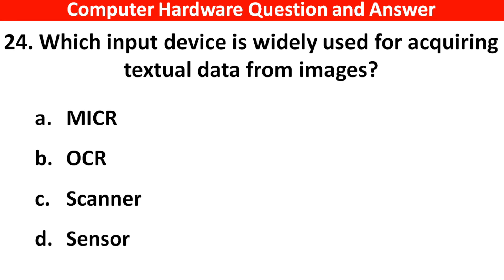Which input device is widely used for acquiring textual data from an image? The right answer is Option B: OCR — Optical Character Reader.